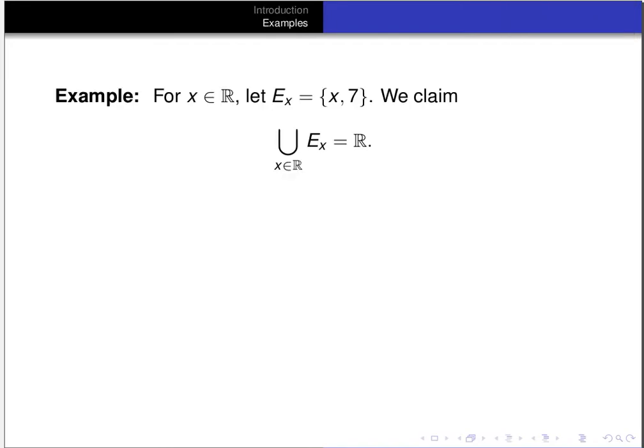Let's look at an example. Let's find the union of these sets E_x. The sets E_x — there is one E_x for every real number x. To form the set E_x, we take the element x together with the number 7. So for each real number x, E_x consists of x and the number 7. We claim that the union of the E_x's is the set of all real numbers.